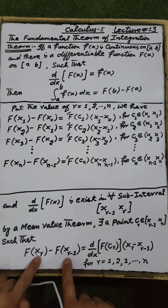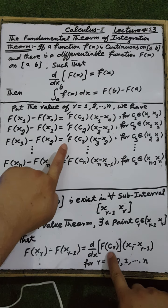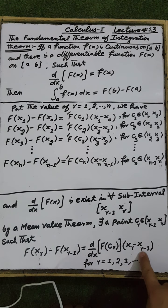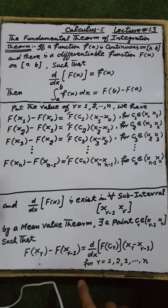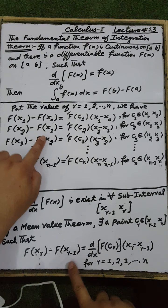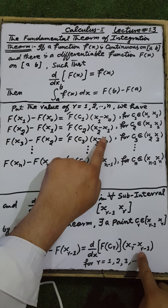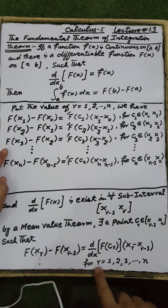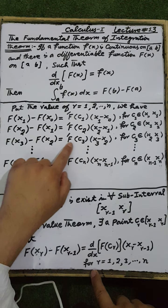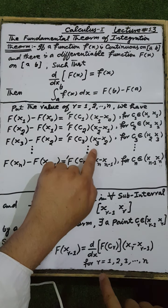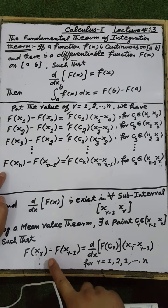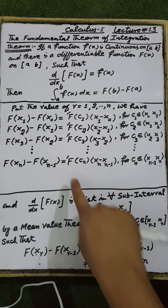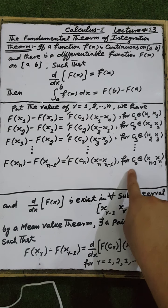Writing these out explicitly: for r = 1, F(x₁) minus F(x₀) equals F'(c₁)(x₁ minus x₀), where c₁ is in the open interval (x₀, x₁). For r = 2, F(x₂) minus F(x₁) equals F'(c₂)(x₂ minus x₁), where c₂ is in (x₁, x₂). For r = 3, F(x₃) minus F(x₂) equals F'(c₃)(x₃ minus x₂), where c₃ is in (x₂, x₃). And so on up to r = n: F(xₙ) minus F(x_{n-1}) equals F'(cₙ)(xₙ minus x_{n-1}), where cₙ is in (x_{n-1}, xₙ).